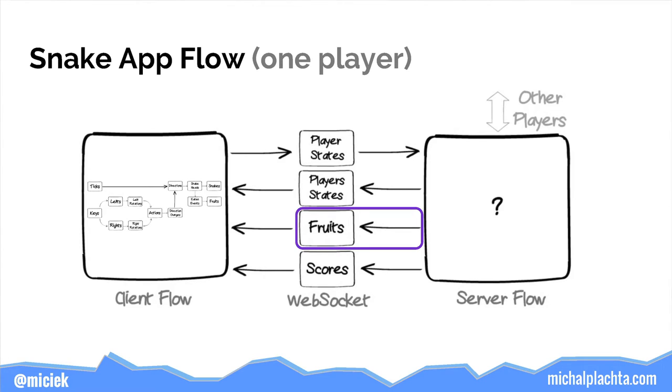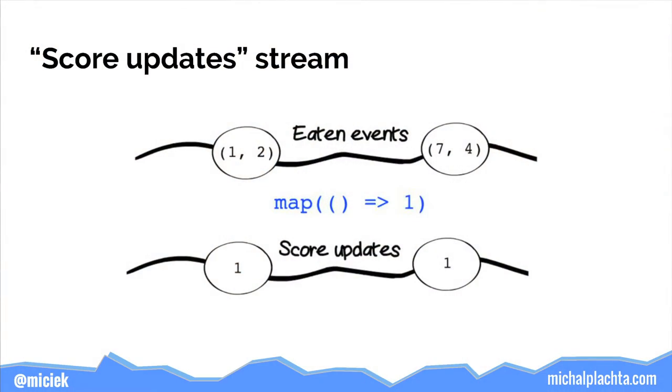Based on the same immutable eaten events stream, we can also create score updates — we just map over it with a function that always returns one. We then scan the score updates stream to get scores for this particular player. In Scala, the score flow is a `Flow` from fruit position to int: we map the fruit position — if it's a new fruit position the score update is 1, if it's the current fruit position it's 0 — then scan to get the sum.